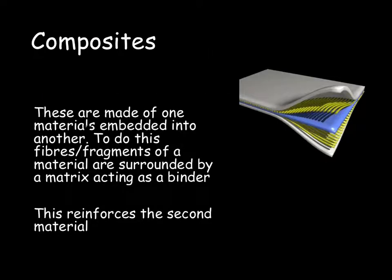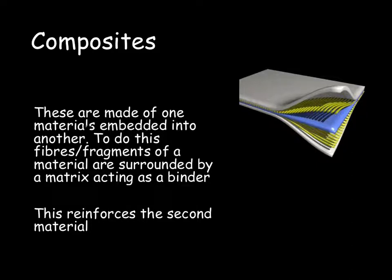Composites, on the other hand, are made of one material that has been embedded into another. To do this, fibres or fragments of material are surrounded by a matrix that acts as a binder. This reinforces the second material.